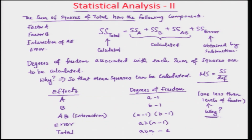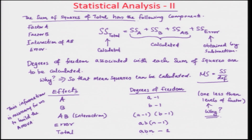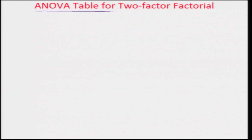These degrees of freedom are important and this information is necessary to build the ANOVA table. The ANOVA table is required to analyze the factorial effects of the factors and their interactions. We will now build the ANOVA table for two-factor factorial experiments.